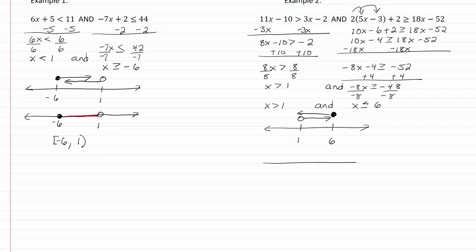We're only going to want to graph the overlap. So that means we have an open dot at 1 and a closed dot at 6. And our graph is just going to be between 1 and 6. Interval notation is going to be from 1 to 6 starting with a parenthesis and ending with a bracket.